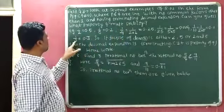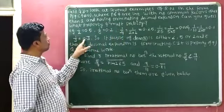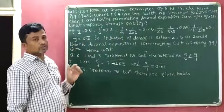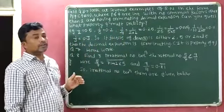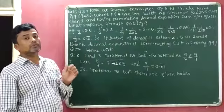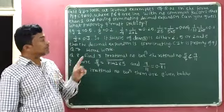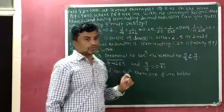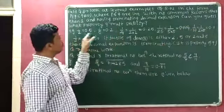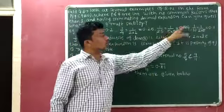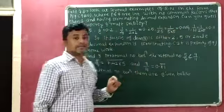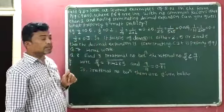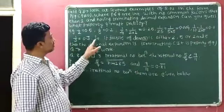And 1 by 3 is equal to 0.333... So, if you observe all these examples, what is the final conclusion?